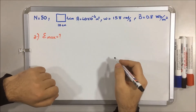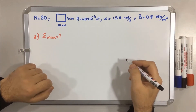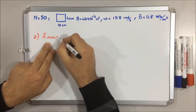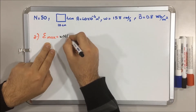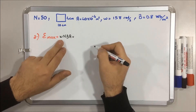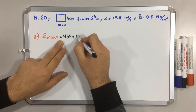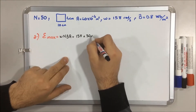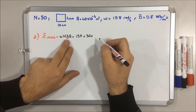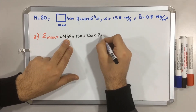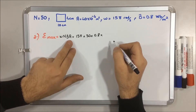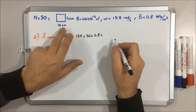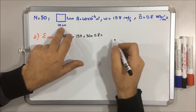Hello, welcome everyone. The question says calculate the Emax, and the formula of Emax is Omega times N times B times A. Omega is given in the question as 15 pi, N is given as 50, B is given as 0.8, and the area is not given directly — we have to calculate it because it is a rectangular shape: 4 cm by 10 cm.